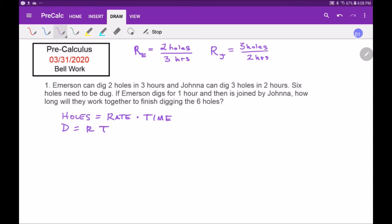So as an example, if we said holes were equal to three holes per hour and they work for two hours, the hours are going to cancel and I'm left with holes. Three times two is six holes.